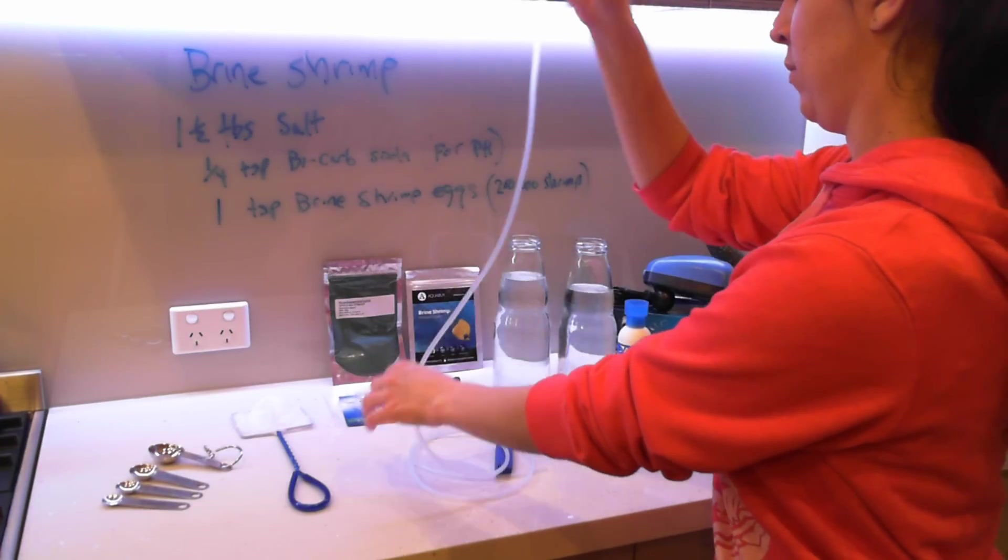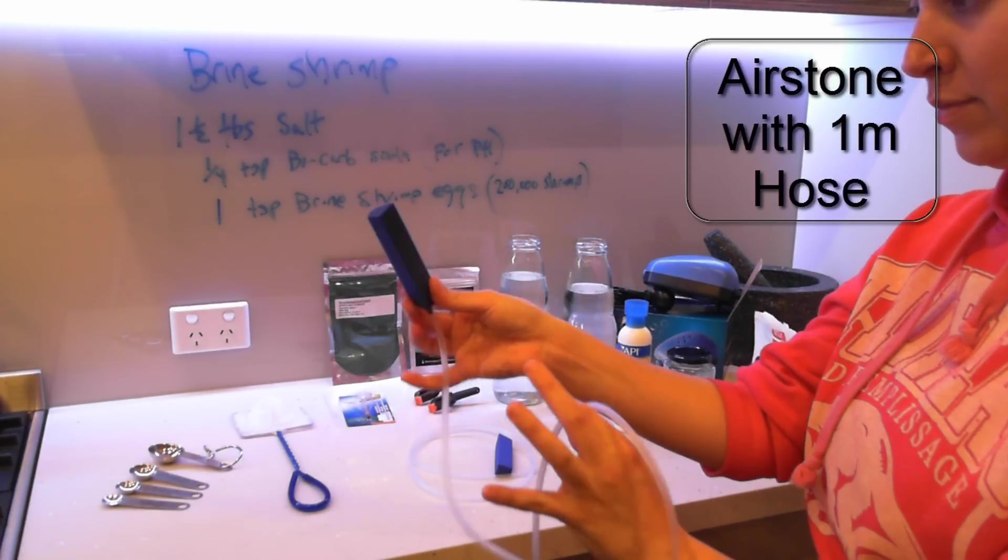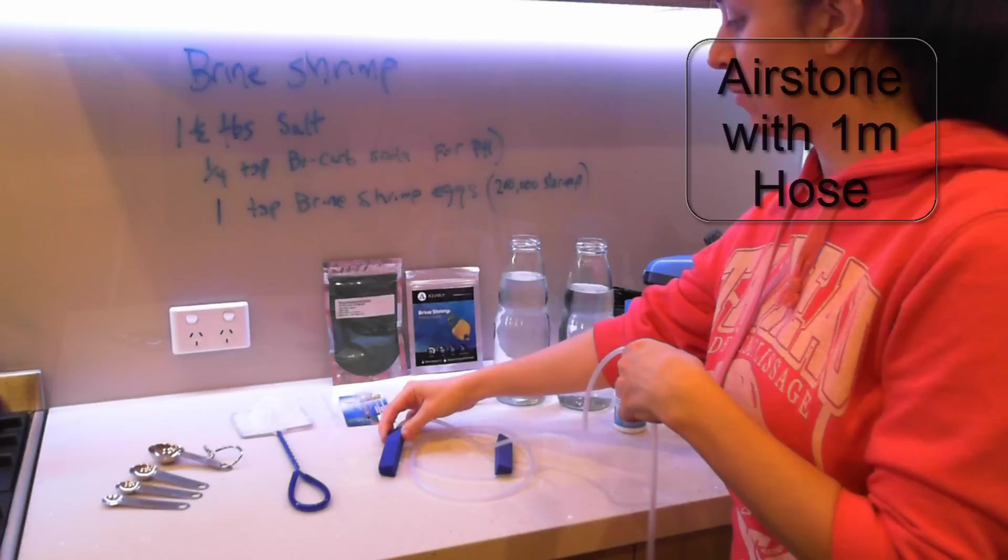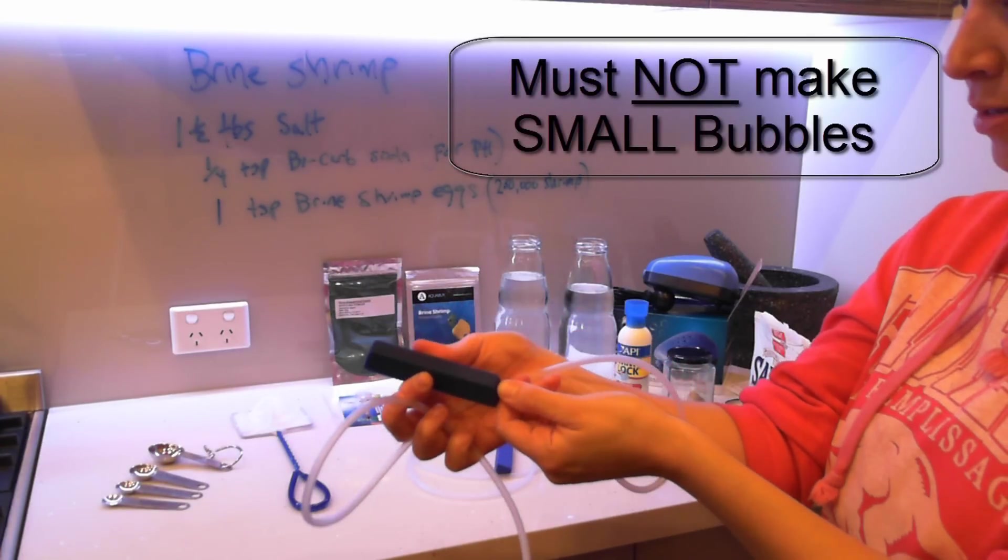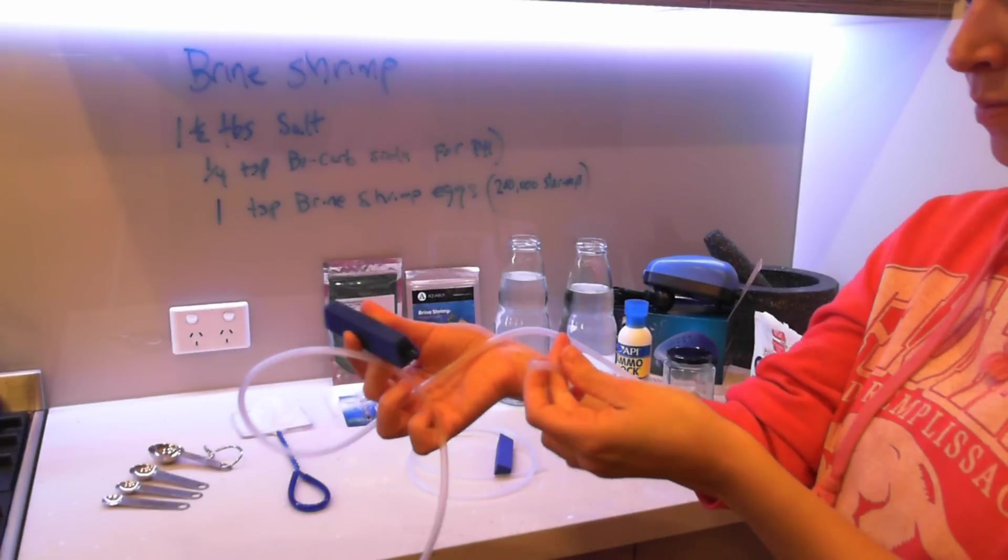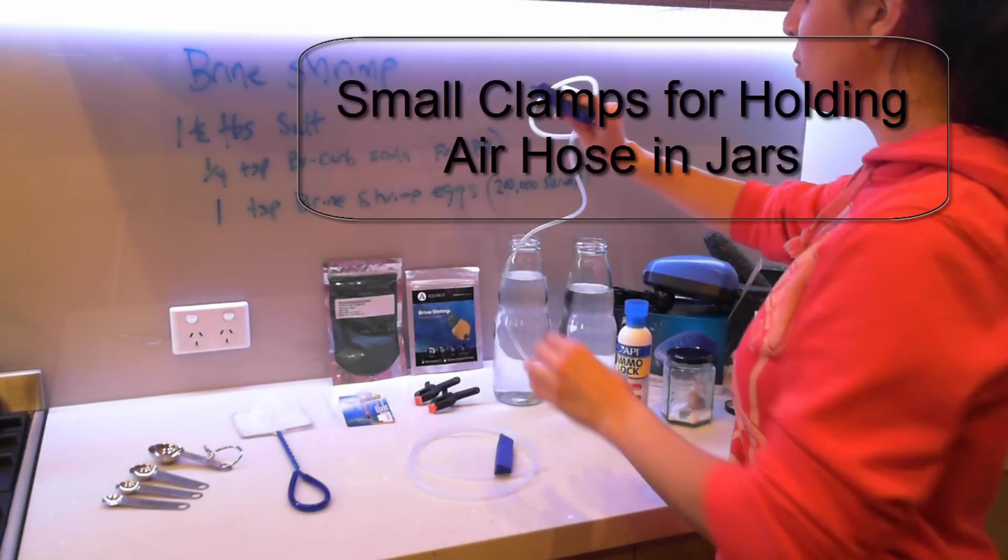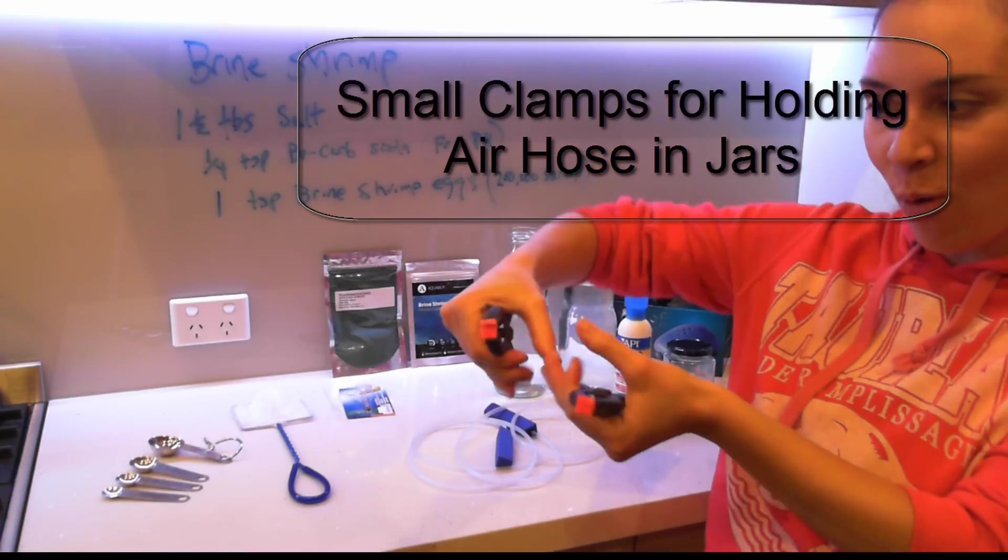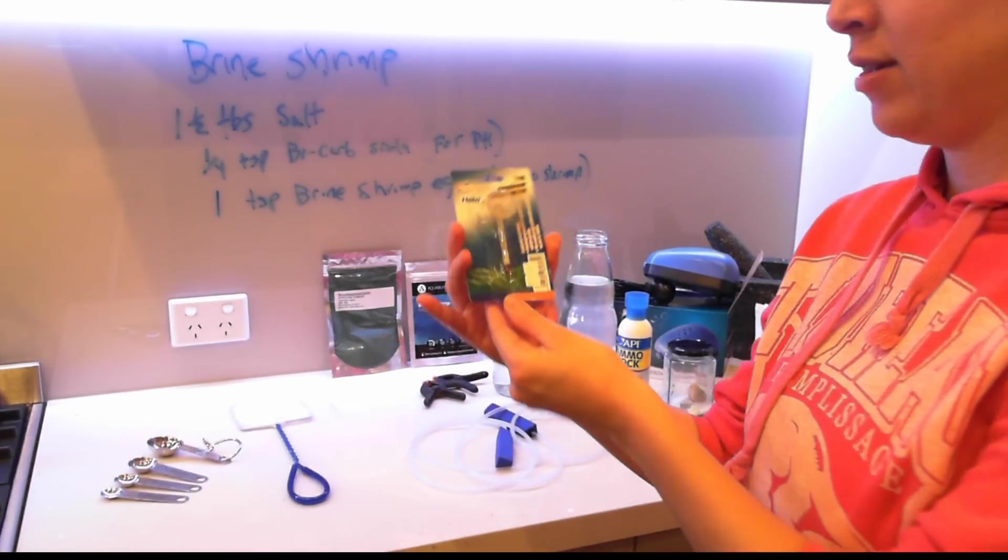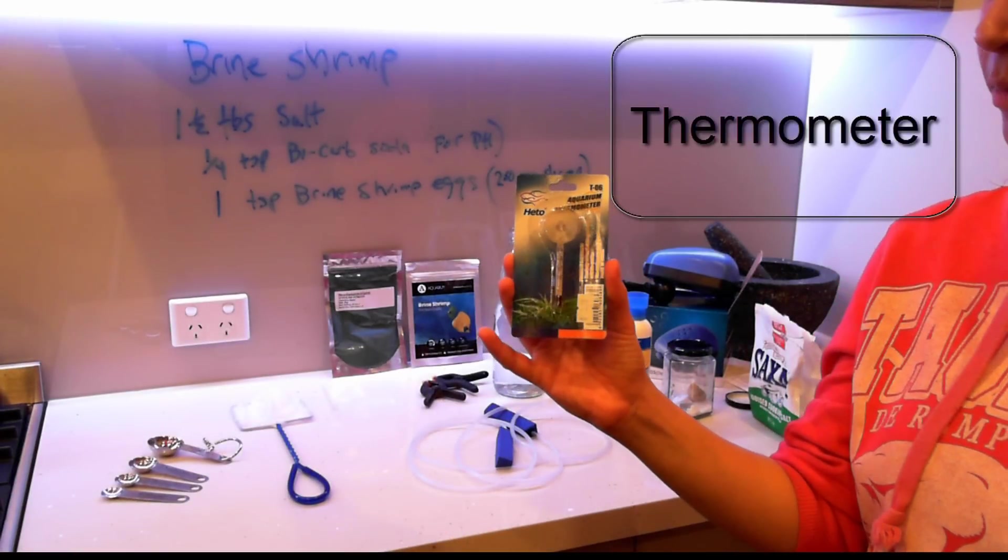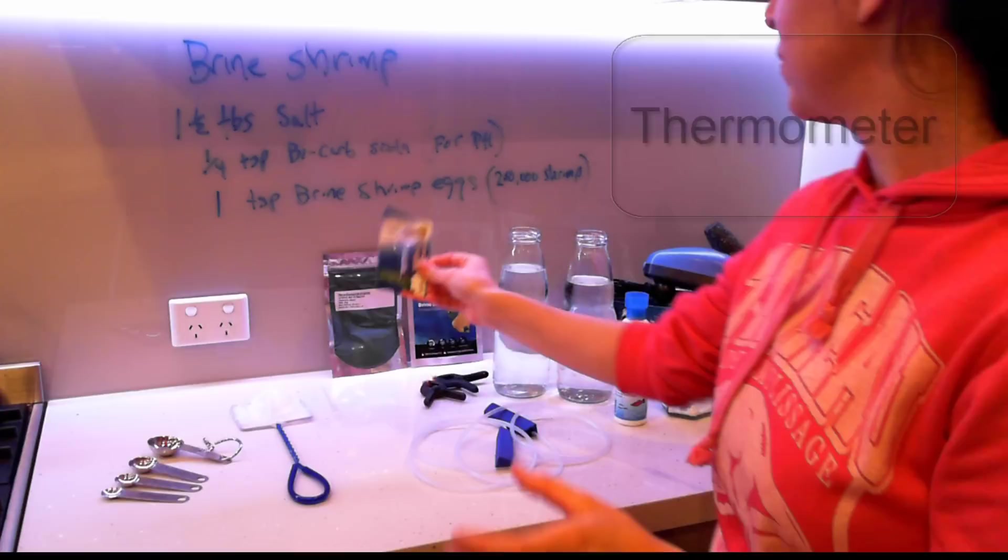I've got the air stone here. That just attaches to the pump. Those get inserted into the bottles. Now, if the air stone is not creating bubbles that are large enough, you can just detach that there and use the hose to create larger bubbles. Just got a couple of clamps here. That's for later on. Next, we have our thermometer. You want to keep the hatching water between 25 and 30 degrees Celsius. This just allows for optimum hatching.